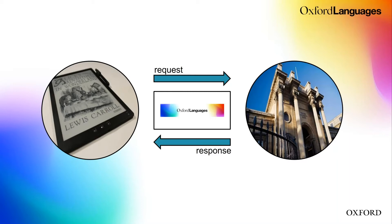You can see on the left a pretty standard use case for our API — just an ebook reader. It can be a Kindle, a Nook, or your own application with ebooks online. As someone is reading an ebook on an application powered by our API, if they want to know what a word means in a specific language or get the definition in the case of monolingual data, they can send a request to Oxford Languages, which sends back a response with the requested data. It's pretty smart and expands the possibilities of a product or application.